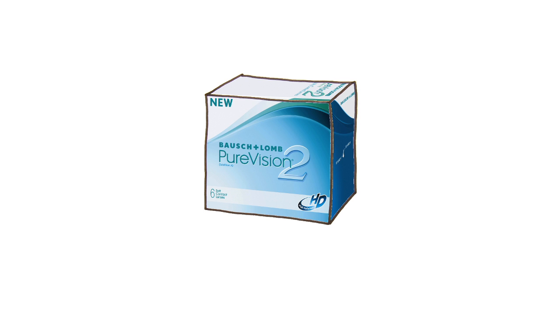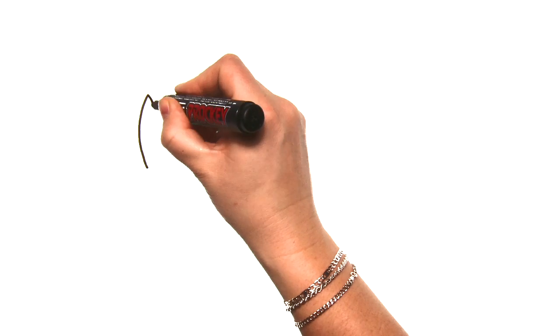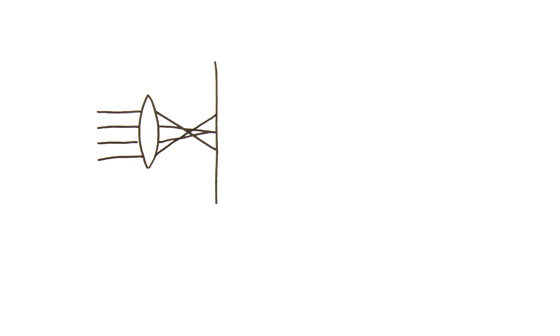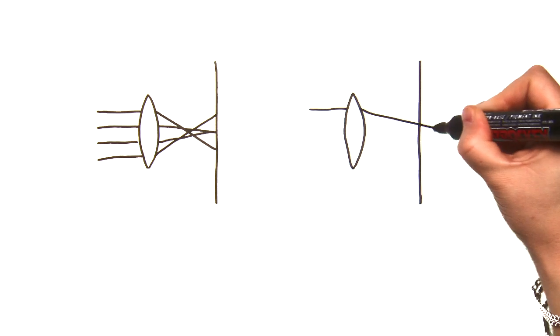But how does that work? To understand this, we first need to understand the influence of spherical aberration on our visual system. In spherical aberration, the different rays don't all meet behind the lens at the same focal point.